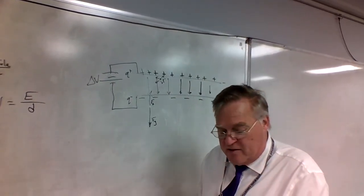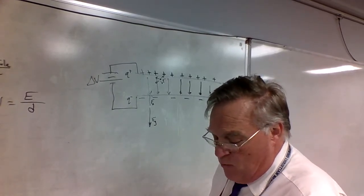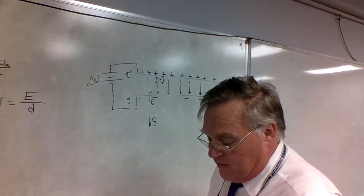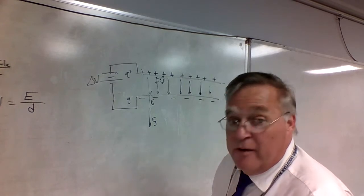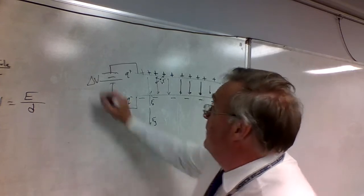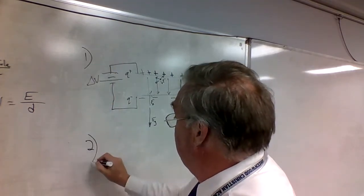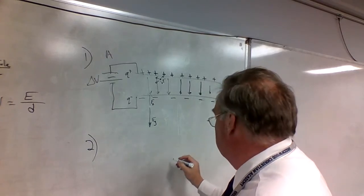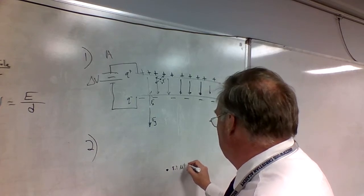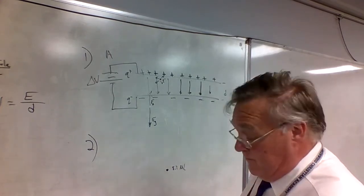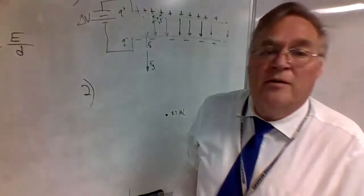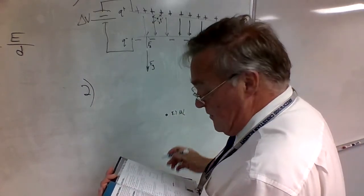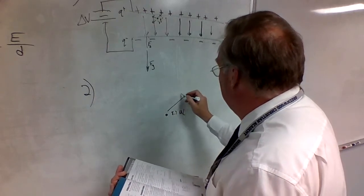Number two: a positive test charge of 8.7 microcoulombs experiences a force of 8.1×10⁻⁶ newtons at an angle of 24 degrees north of east. What are the magnitude and direction of the electric field strength at the location of the test charge? Here's the positive test charge in some E field, with force F in the 24° north of east direction.